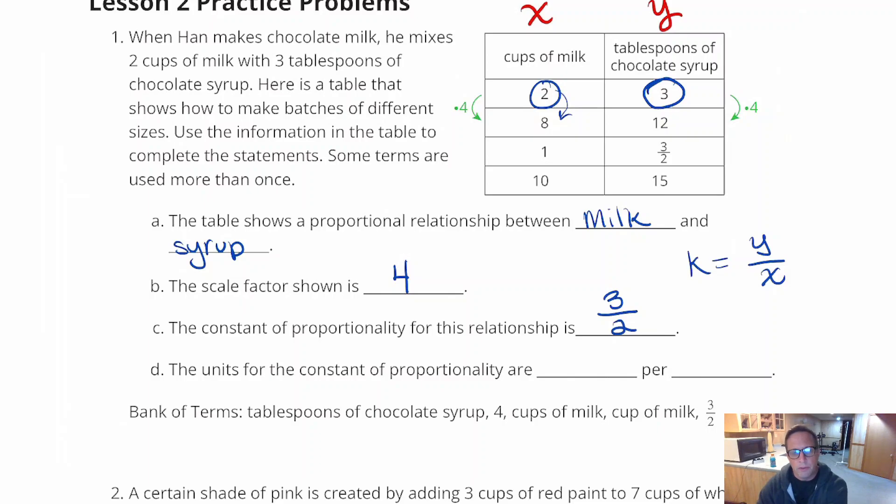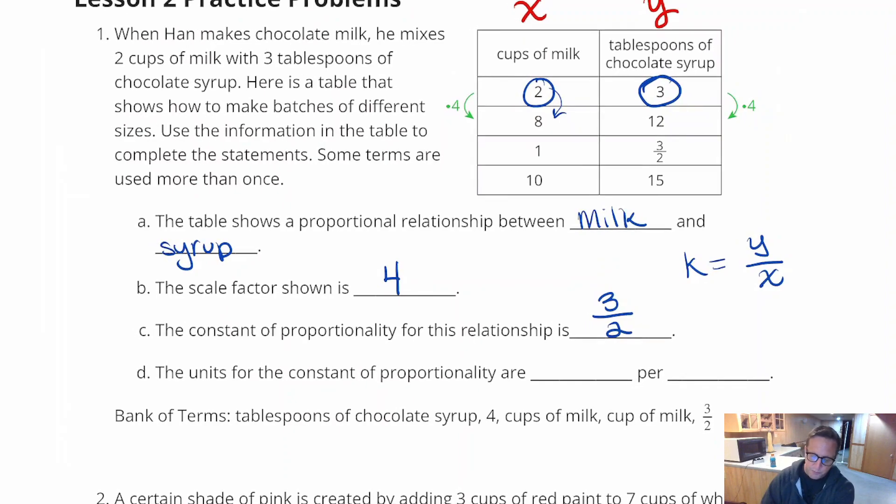The units for the constant of proportionality are, what do we got? We've got syrup. I'm going to have to kind of abbreviate here. I think that's the abbreviation for tablespoons. Tablespoons of chocolate syrup per cup, cups of milk.